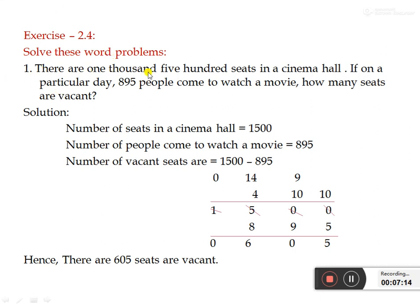Question 1: There are 1500 seats in a cinema hall. On a particular day, 895 people come to watch a movie. How many seats are vacant? Total seats in cinema hall: 1500. Number of people who came: 895. We need to find remaining seats, so we do subtraction: 1500 minus 895.